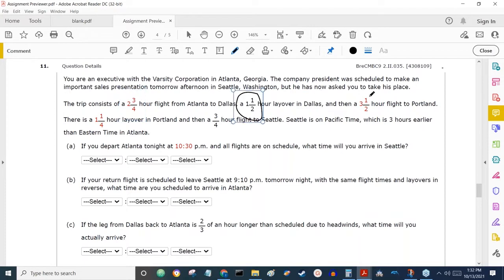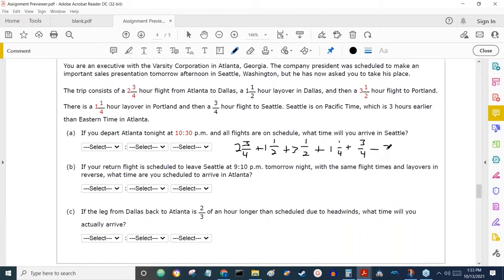It's this plus this layover plus this plus this plus this, but then in Seattle we're three hours behind, so it's subtracted by this number here. So let's write that out. The total flight time is 2¾ hours for the first flight, plus the 1½ hour layover, plus the 3½ hour flight to Portland, plus the 1¼ hour layover in Portland, and then plus a ¾ hour flight to Seattle, subtracted by the three hours to get us back in Seattle time.